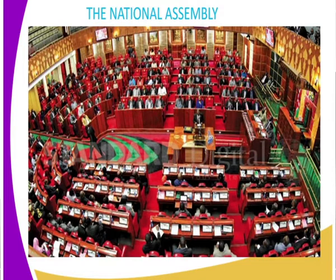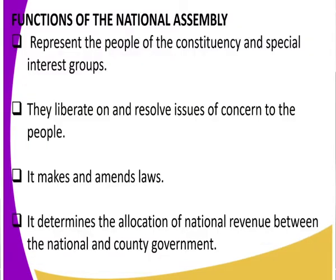Now can you get to look at the functions of the National Assembly? Remember these are people who are elected from the constituency level, from each and every constituency — they represent constituents at their constituency levels. Now, the first function: they get to represent people of the constituency and special interest groups.